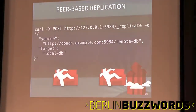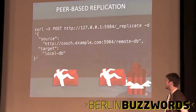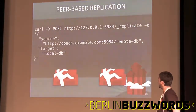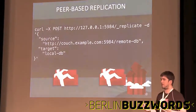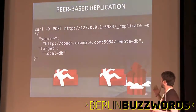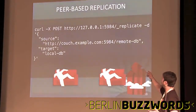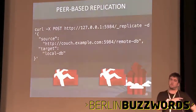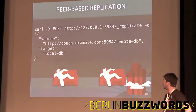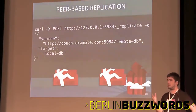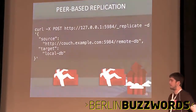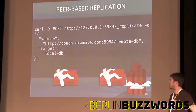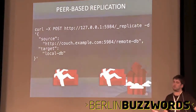For replication, CouchDB obviously again through the HTTP API allows you to replicate one database to another. All you do is send a POST request where you specify the URL of the source and the URL of the target, and that will use the same PUT, GET, and POST API to copy documents from one place to another. You can also set it to be continuous, so all new changes will just get written to the new database. That's how something like Ubuntu One works.